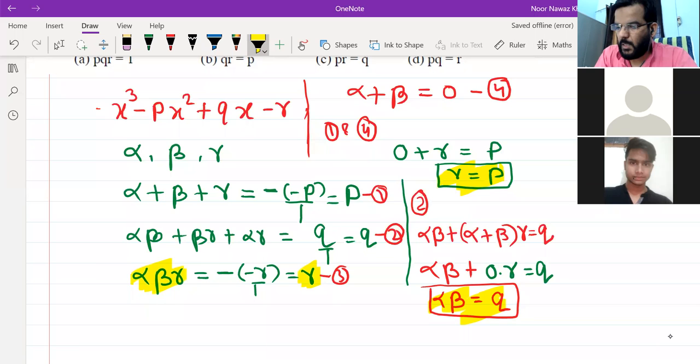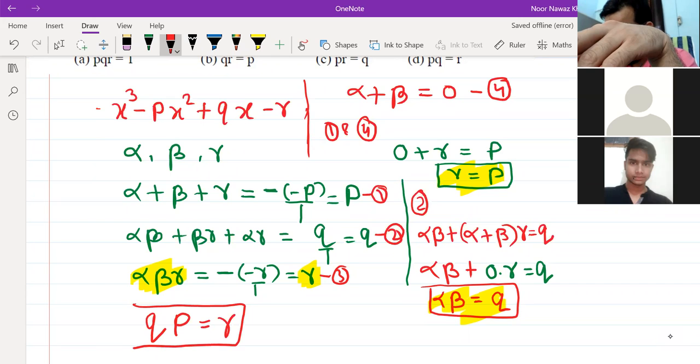So, we will put Q on alpha and beta, and we will put P on gamma. And its value will be R. So, this is our answer. Q is equal to R. Do you understand this or not?